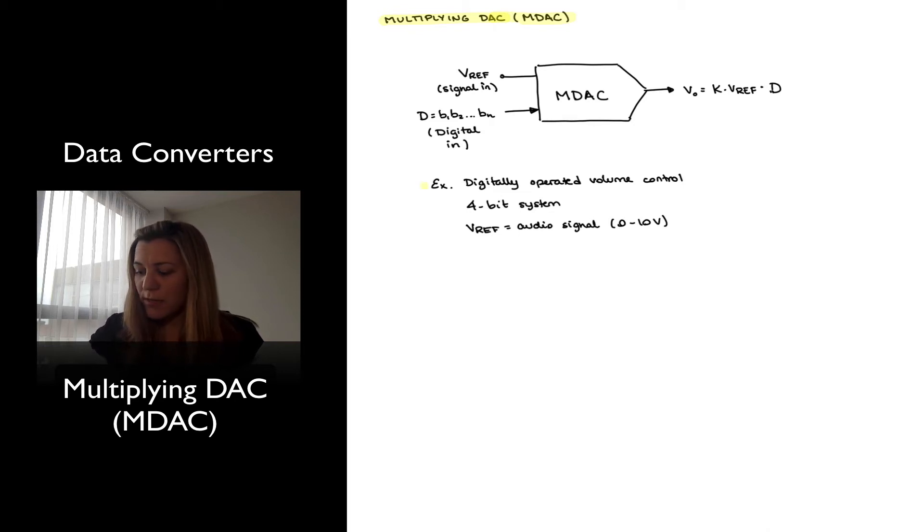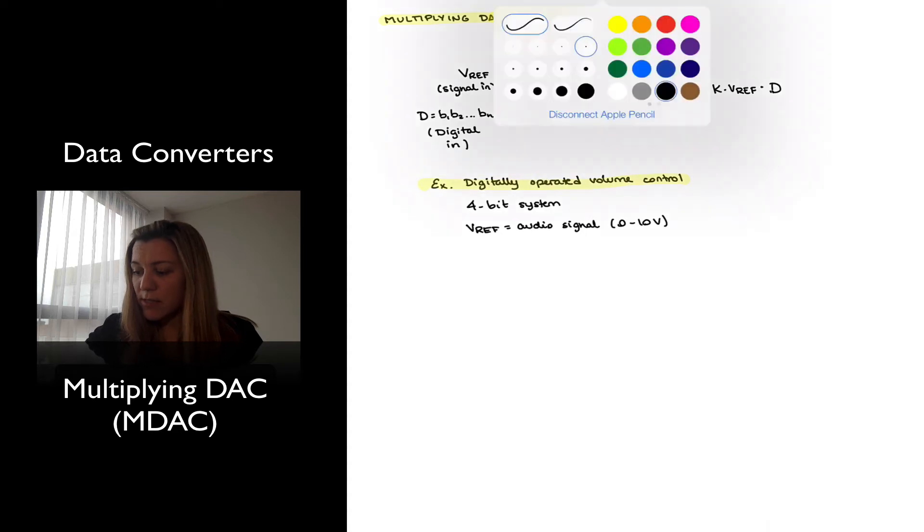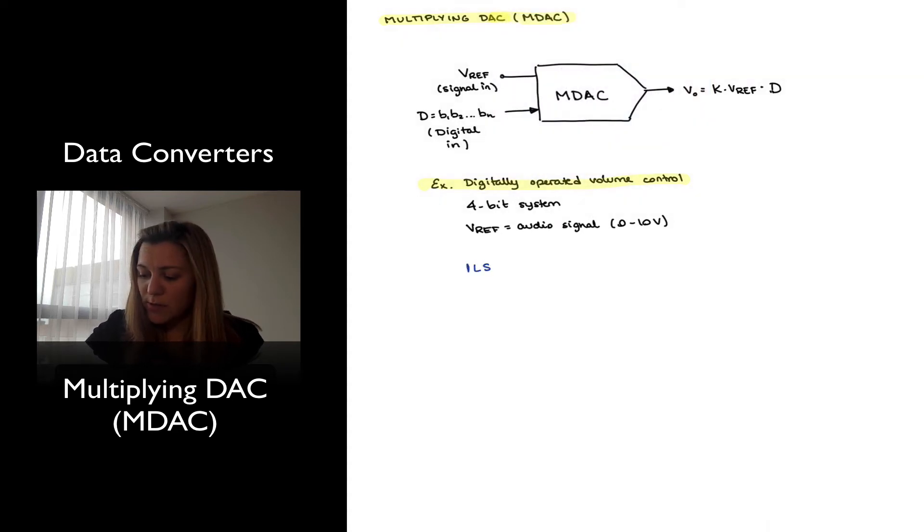So first of all, notice that the LSV size, I'm going to calculate my 1 LSV in this case, is as always my full-scale voltage divided by 2 to the N. My full-scale voltage in this case is equal to 10, and my number of bits is equal to 4. So 10 divided by 2 to the 4 is equal to 0.625 volts. And so that means that for every change, for every step in my digital input word, I will have an increase in overall amplitude of 0.625 volts.